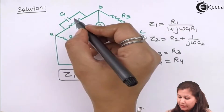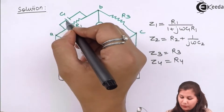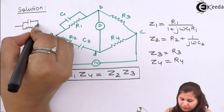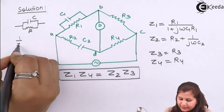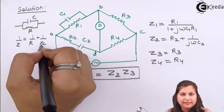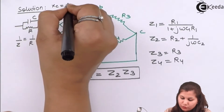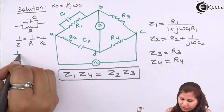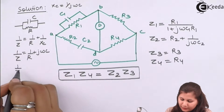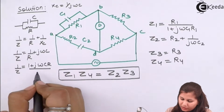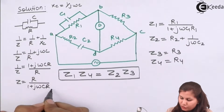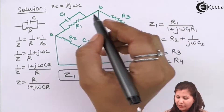For the parallel combination of R and C: 1/Z = 1/R + 1/XC, where XC = 1/(jωC). So 1/Z = 1/R + jωC, which gives 1/Z = (1 + jωCR) / R, therefore Z = R / (1 + jωCR). This confirms the parallel combination formula Z1 = R1 / (1 + jωC1R1).